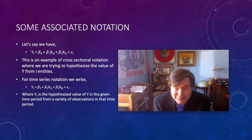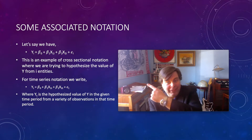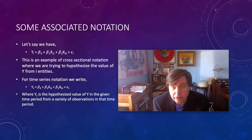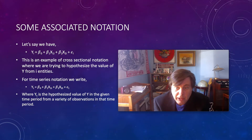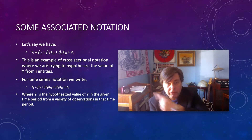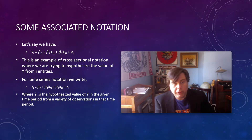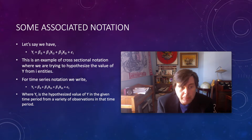Before we dig into time series data, we need to make a quick note about notation. So far we've seen notation where we're trying to explain y_i in terms of a number of variables — for example, the price of the i-th car based on explanatory variables like size, gas mileage, or features. With time series data, the notation changes to t's, so we're talking about the dependent variable at a particular point in time t.